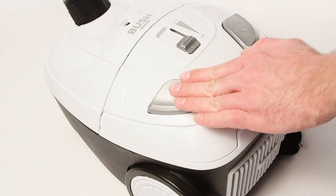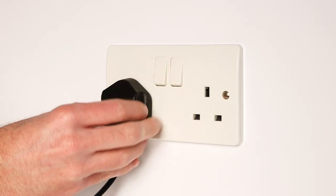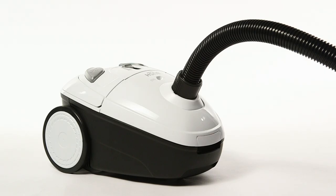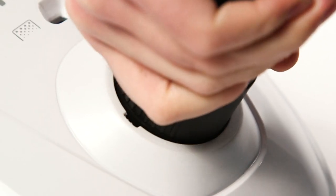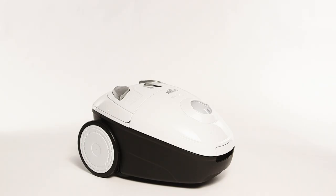To change the dust bag, switch off and unplug the vacuum. Then, remove the hose from the hose socket and open the dust bag compartment by pushing the handle upwards and lifting the lid.